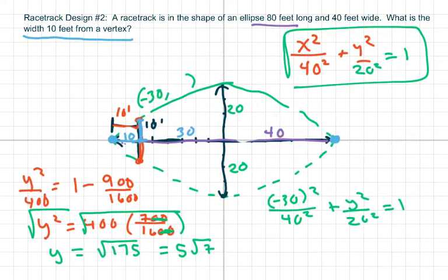But to get the double width here, because if you want to know the whole width, you have to multiply this by 2. So you multiply that by 2, and you get 5 square root of 5, which is approximately 26.5 feet.